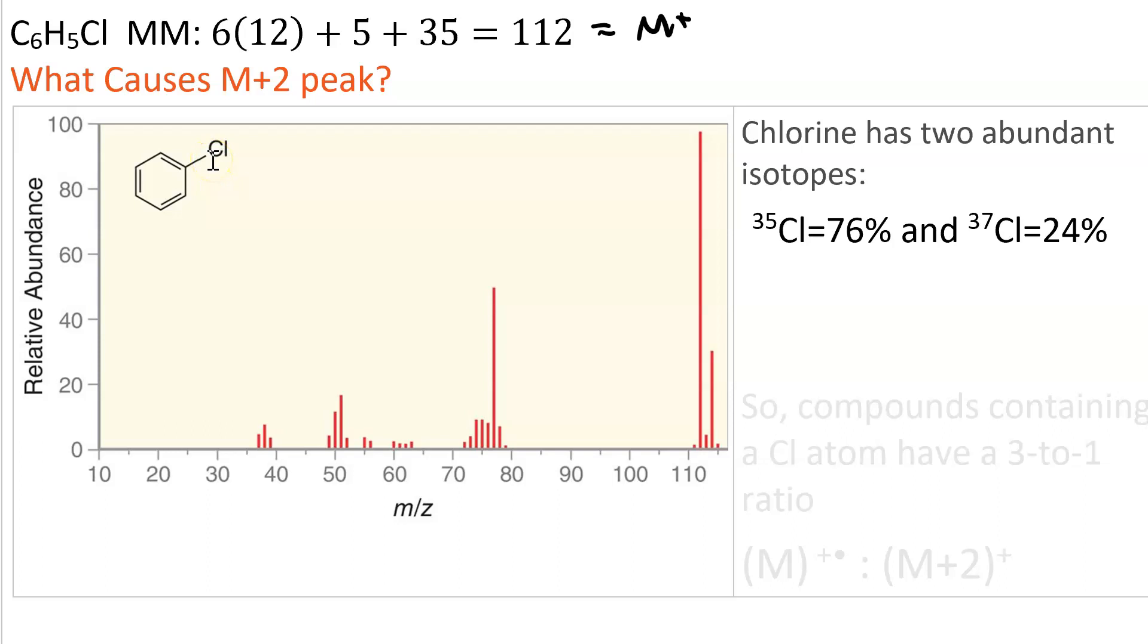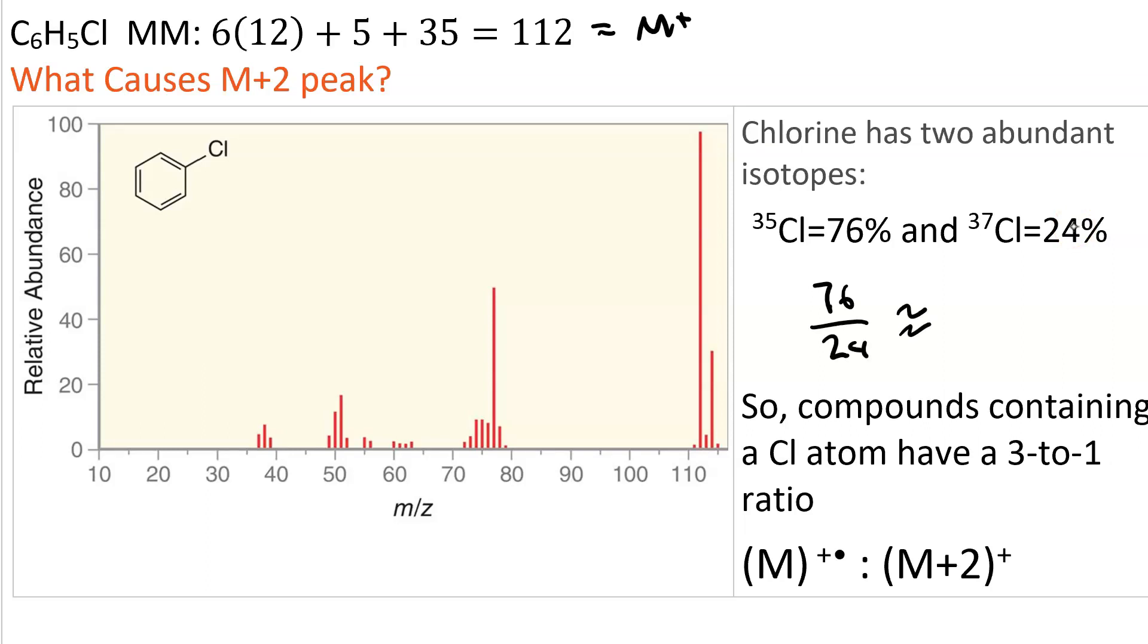This peak represents the molecules that have the chlorine-35 isotope. This peak represents the smaller number of molecules that have the chlorine-37 isotope. Since 76 over 24 approximately equals 3, this represents a 3 to 1 ratio of the molecular ion peak to the M plus 2 peak, and that is characteristic of compounds with chlorine.